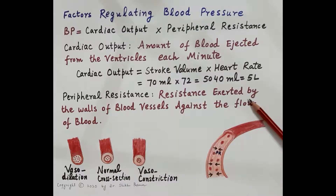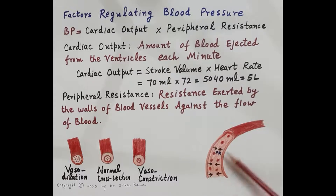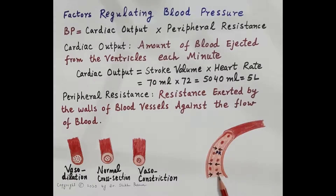The other factor on which blood pressure depends is peripheral resistance. Peripheral resistance is the resistance exerted by the walls of blood vessels against the flow of blood. As shown in the diagram of a blood vessel, this arrow represents the resistance exerted by the walls of the blood vessels against the flow of blood, which is termed as peripheral resistance.